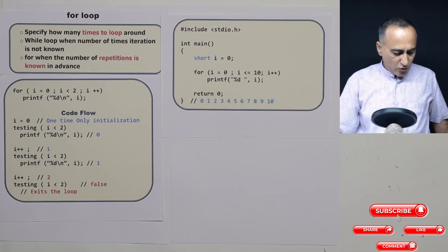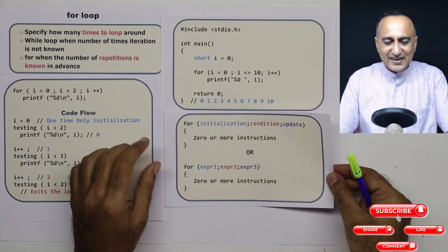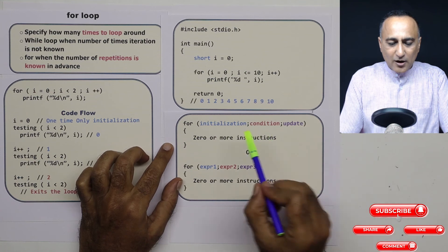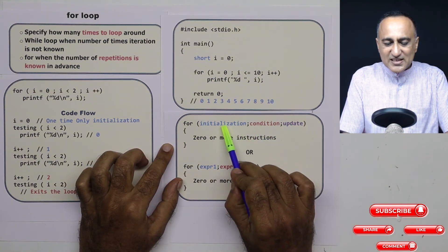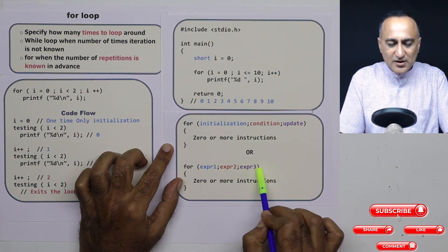Now, if you want to know the syntax of the for loop, the for loop is generally like this. Although in place of these, you can consider this as expression one, expression two and expression three, as I have shown here.